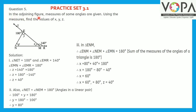Question number 5. In the adjoining figure, measures of some angles are given. Using the measures, find the values of x, y, and z. Observing the figure, triangle ENM is given, where angle x, angle y, and angle z are the interior angles. Angle EMR is an exterior angle of 140 degrees, and angle NET is an exterior angle of 100 degrees. We need to find angle X, angle Y, and angle Z, beginning with angle Z.